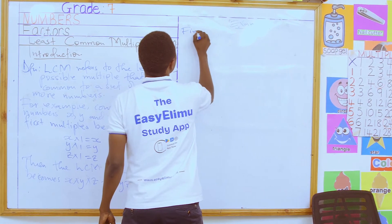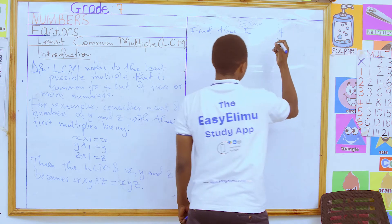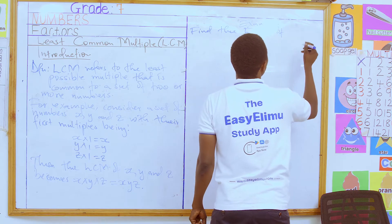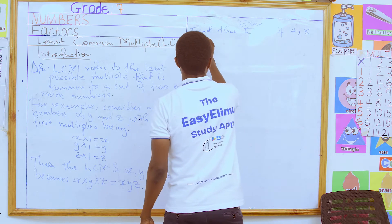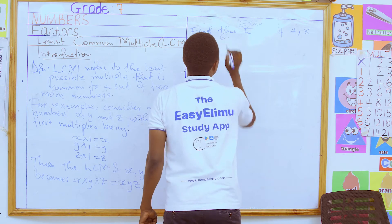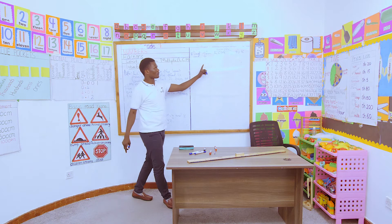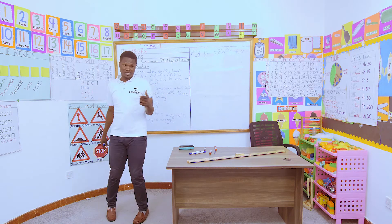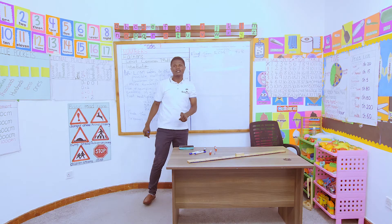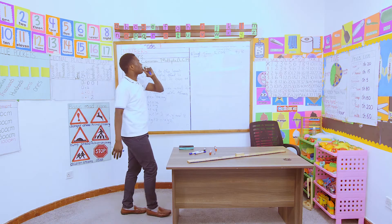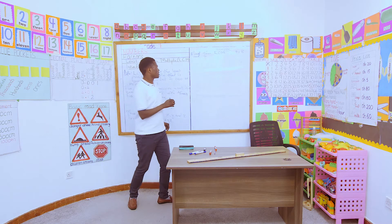For example, find the LCM of 4, 8, and 6. We can use the multiples method, but that method is limited to smaller numbers. Imagine finding the LCM of numbers like 360, 400, and 120 — listing all their possible multiples would be very cumbersome. For that reason, I encourage most of my students to stick to Method 1.